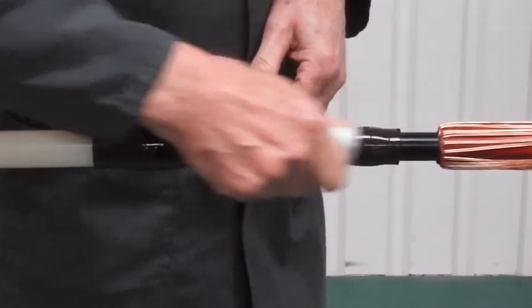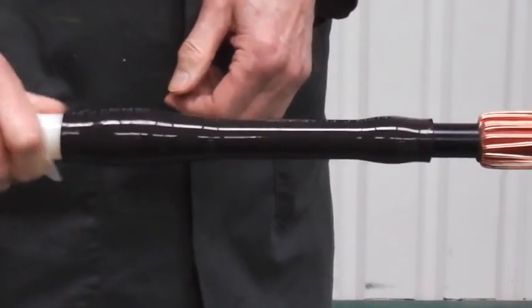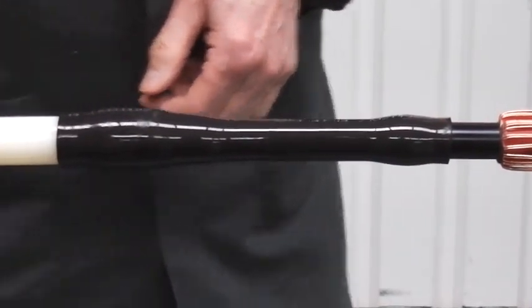Now use the tissue provided to clean the surface of the stress control tube. This has shown to improve electrical performance.